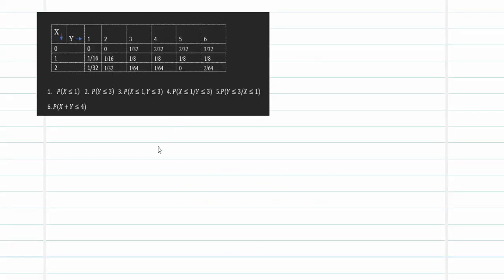The problem gives us random variables X and Y. We have been asked to find a series of quantities: P(X < 1), P(Y < 3), P(X ≤ 1), P(Y ≤ 3), P(X ≤ 1 | Y ≤ 3), P(Y ≤ 3 | X ≤ 1), and P(X + Y ≤ 4).